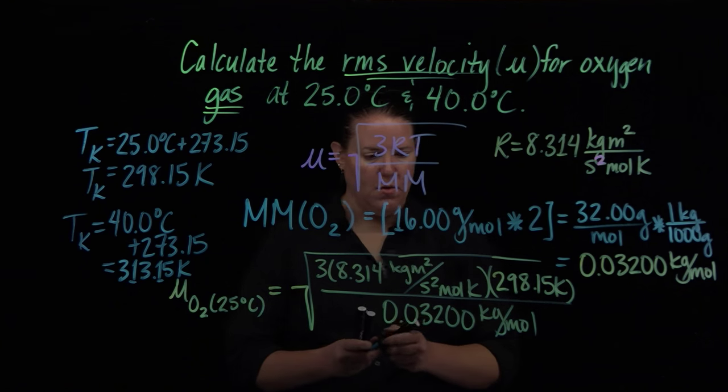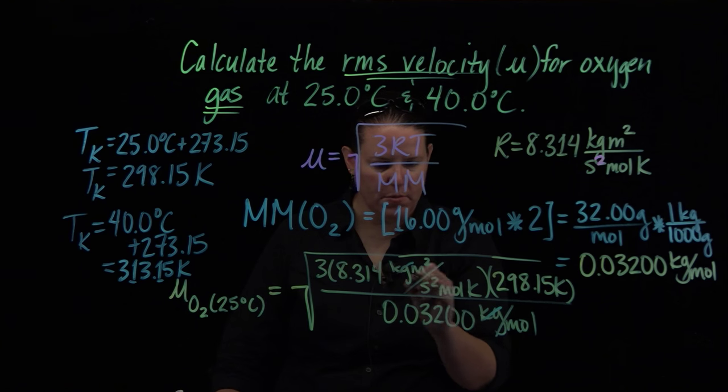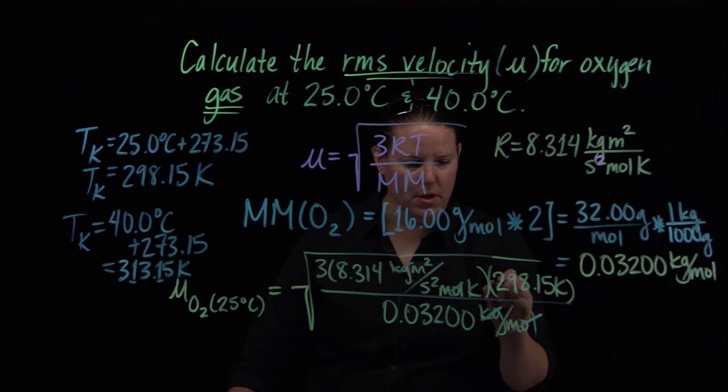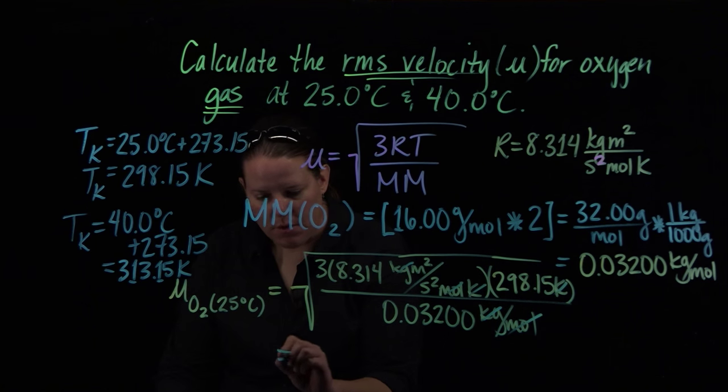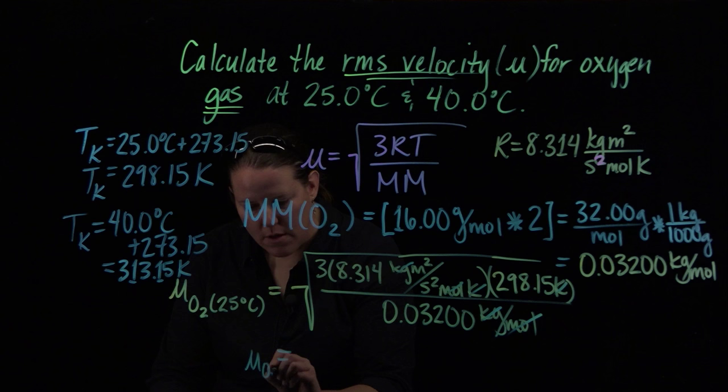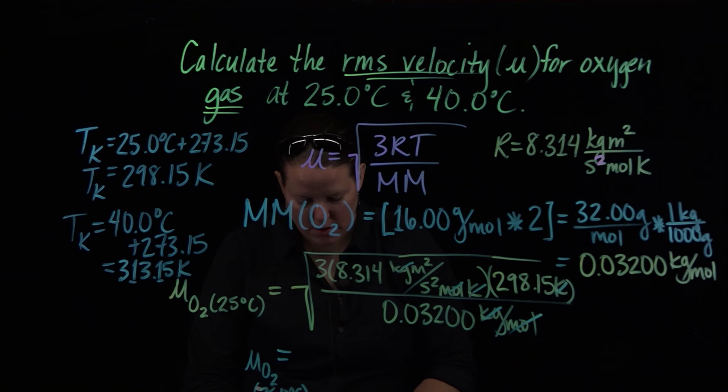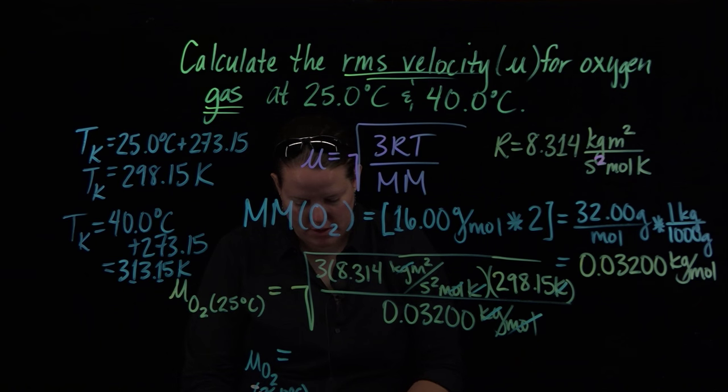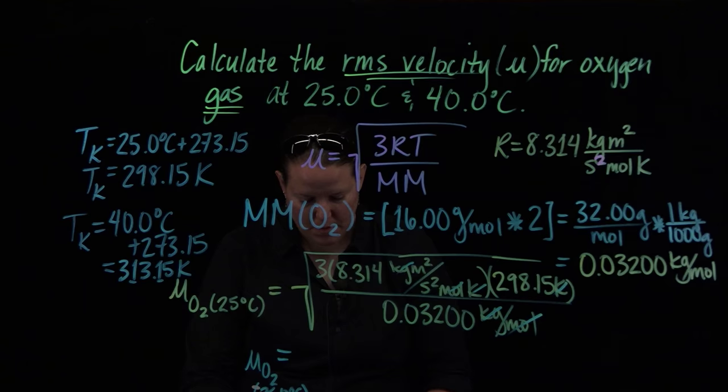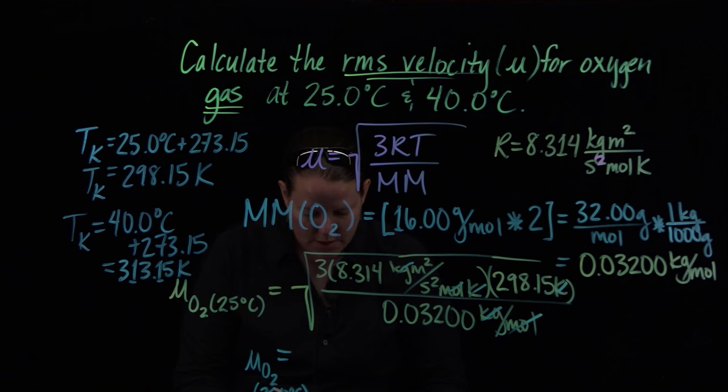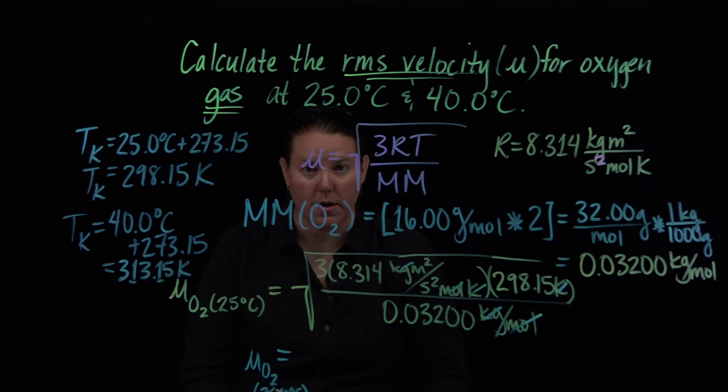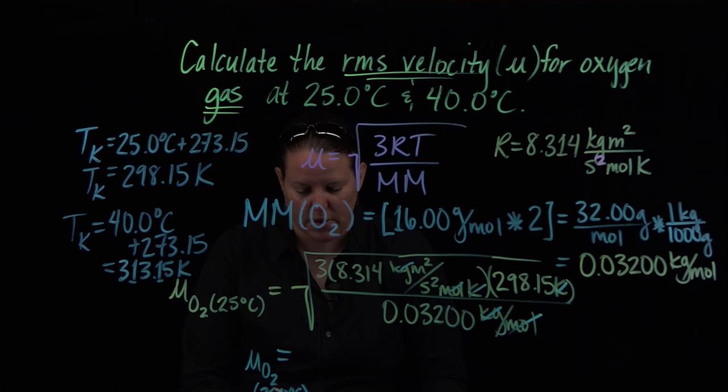Now we're going to cancel out kilograms, moles, and Kelvin. We're going to get the root mean square velocity of O2 at 25.0°C. Let me use my calculator to plug this in. We got a cool number like 482 meters per second.